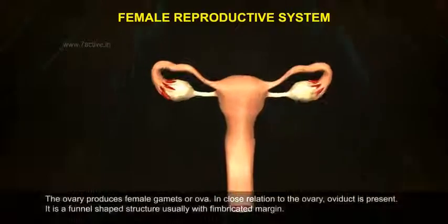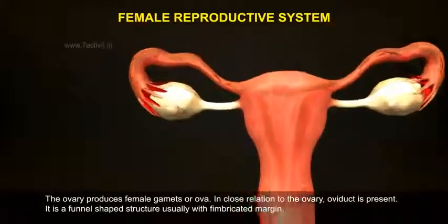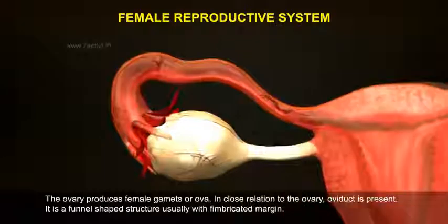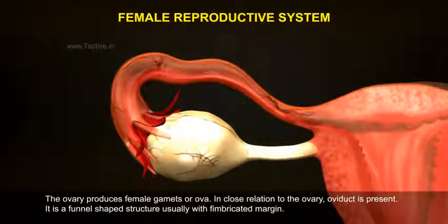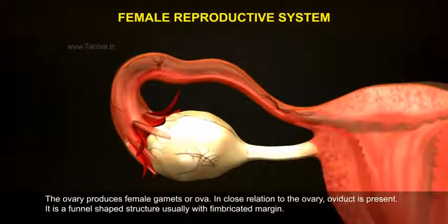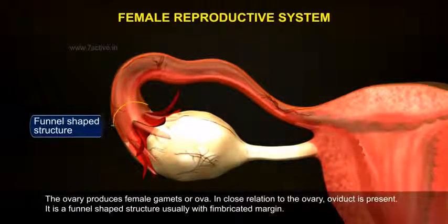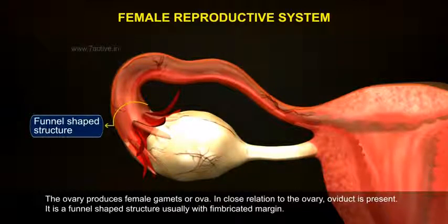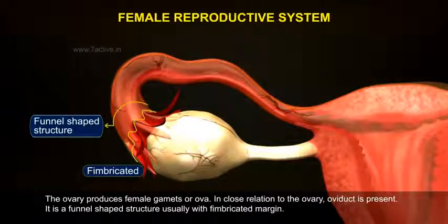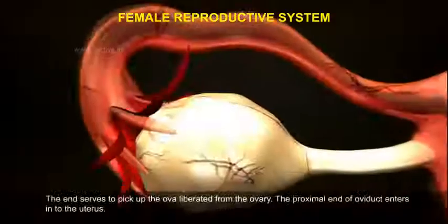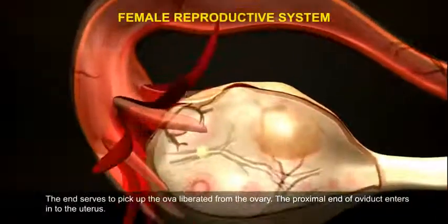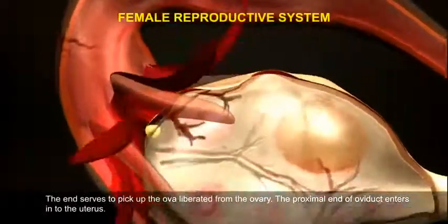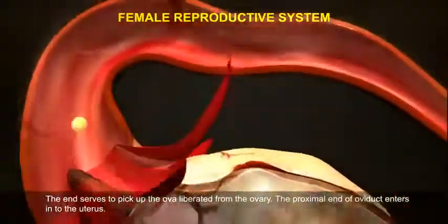The ovary produces female gametes or ova. In close relation to the ovary, the oviduct is present. It is a funnel-shaped structure usually with fimbricated margin, and its end serves to pick up the ova liberated from the ovary.